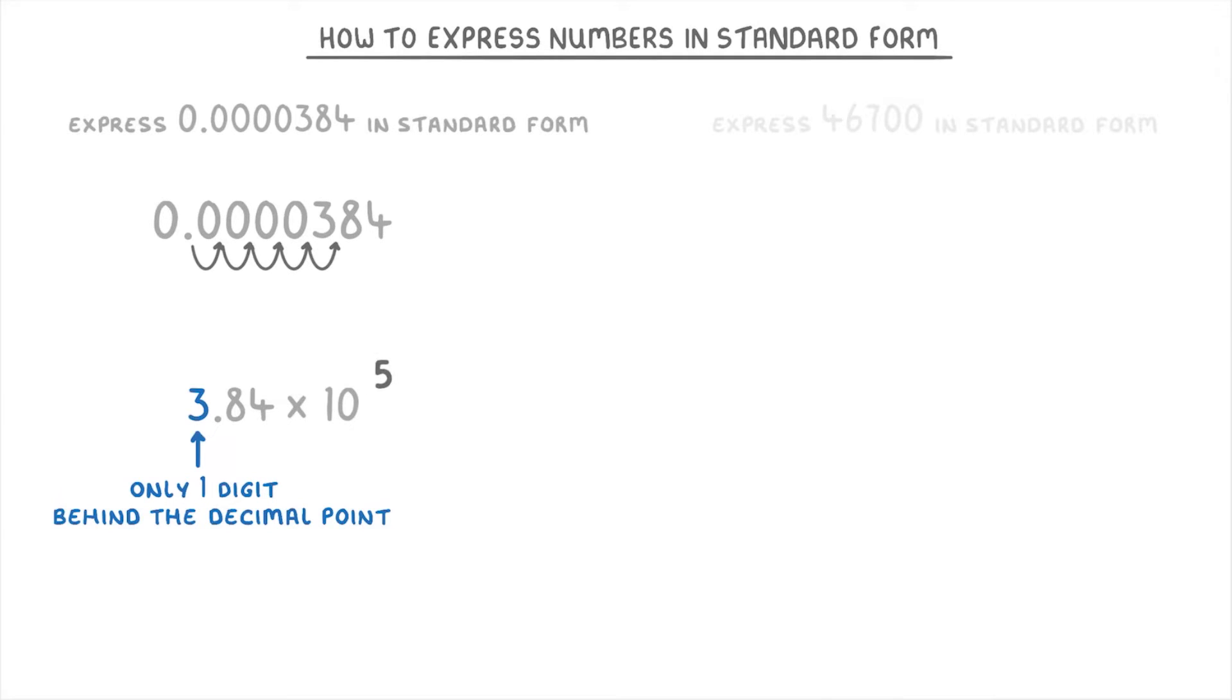To figure out whether that's a positive or negative five though, we need to look at our original number and see whether it's small or big. Because 0.0000384 is smaller than 3.84, that tells us that our power is going to have to be negative, because negative powers make things smaller. So our overall answer is 3.84 times 10 to the power of negative 5.